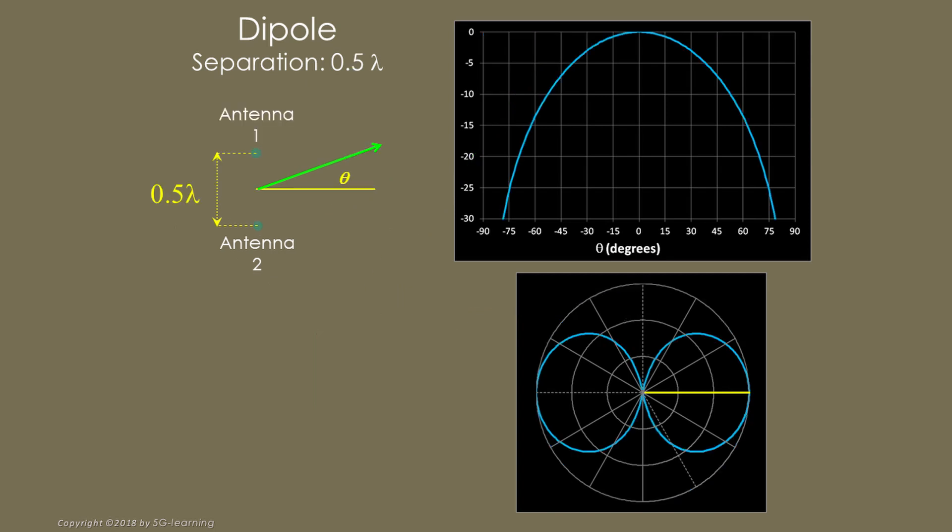If we increase the separation to half a wavelength, the radiation pattern is no longer constant with theta. We observed that gain is maximum at the zero degrees direction. We also observed that the gain is minimum in the direction coincident with the straight line joining the antenna elements.